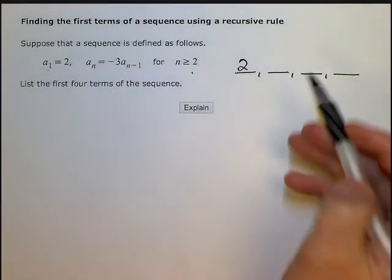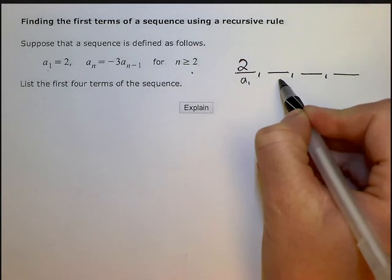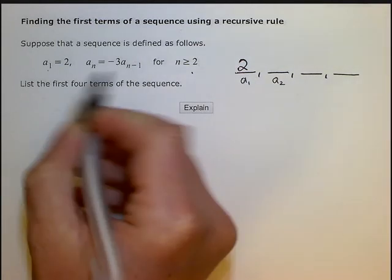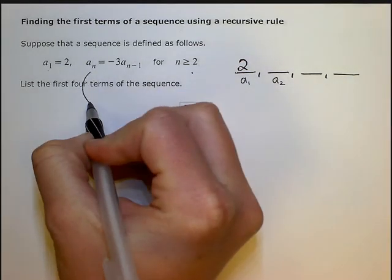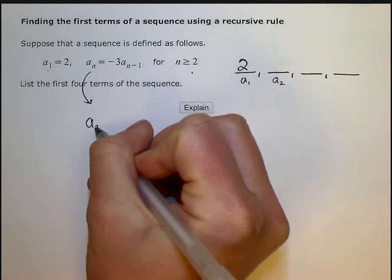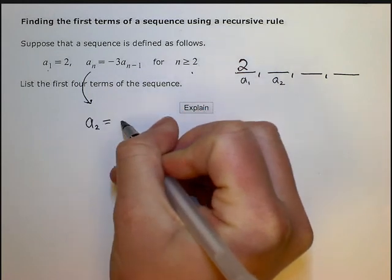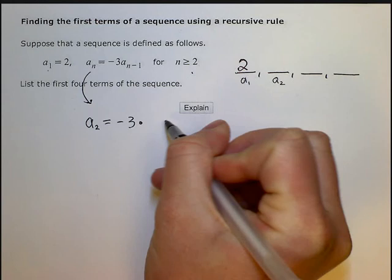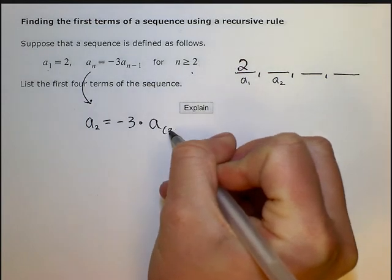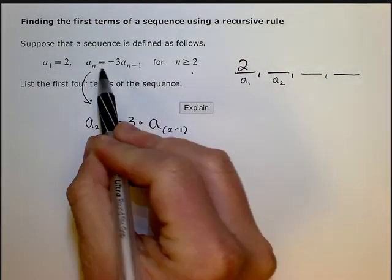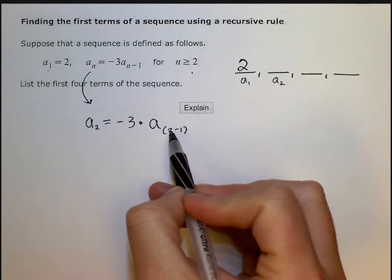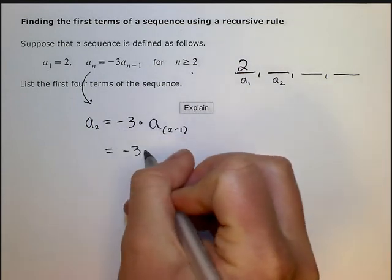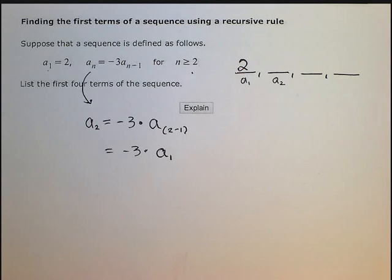So this is a sub 1. In order to find a sub 2, I'm going to do this formula. So I want to find a sub 2, which means I'm going to do negative 3 times a sub 2 minus 1 because I want to find 2, not n. Well, 2 minus 1 is actually negative 3 times a sub just 1 because 2 minus 1 is 1.